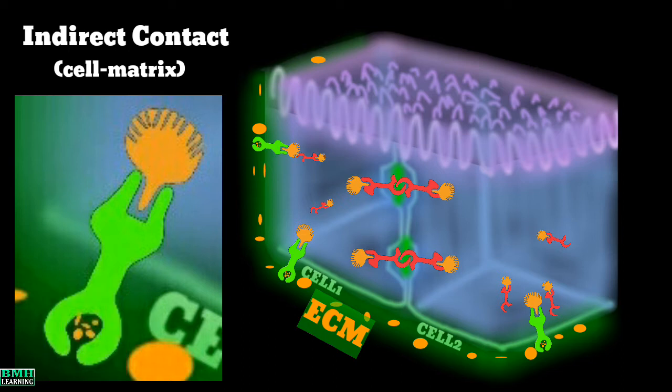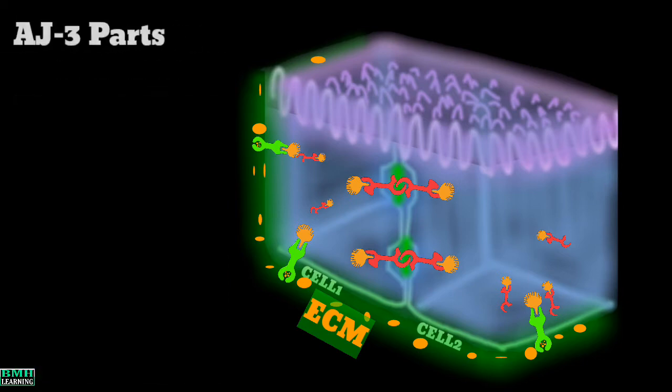Both these types of anchoring junctions are named and classified differently and will be discussed very shortly. Let's get into the structures of these anchoring junctions. All types of junctions, including the anchoring junctions, are organized into three parts.